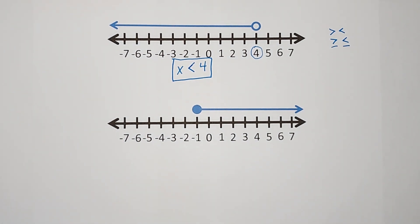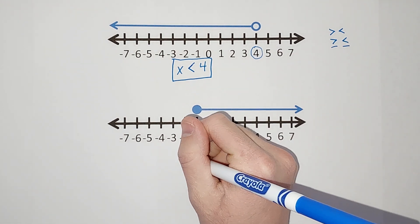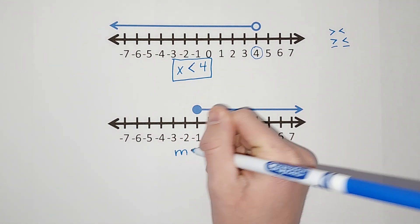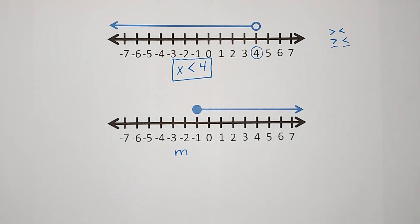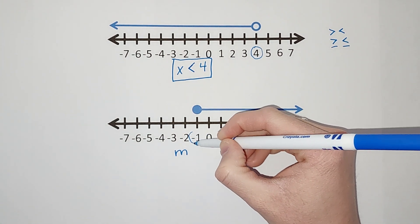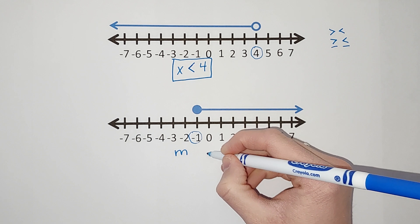Okay, next one. We're gonna pick another variable. Let's do m this time just to shake things up. All right, this time I have my dot is over negative 1, so we know negative 1 is important.